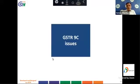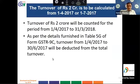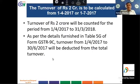Certain issues on filing of form GSTR 9C were also reported. One query was: is the turnover of ₹2 crore calculated from 1 April 2017 or 1 July 2017? The turnover of ₹2 crore will be counted for the period 1 April 2017 to 31 March 2018. As per Table 5G of form GSTR 9C, turnover from 1 April 2017 to 30 June 2017 will be deducted from the total turnover.